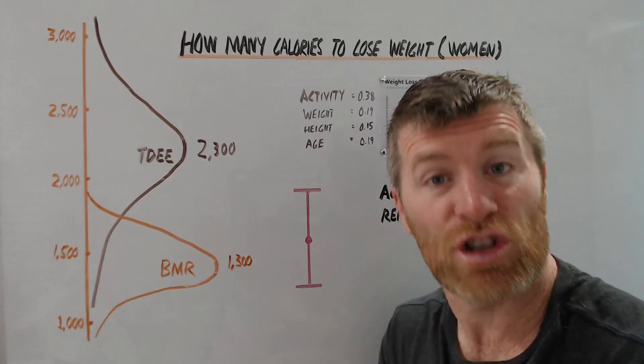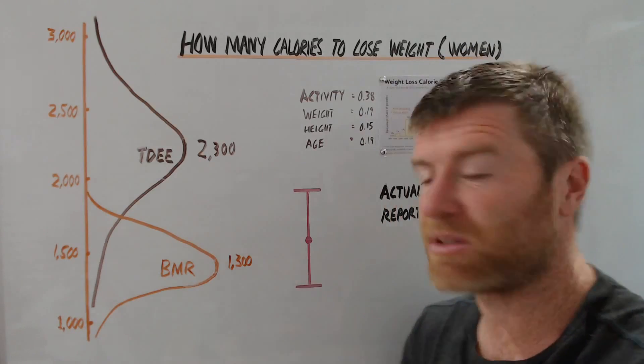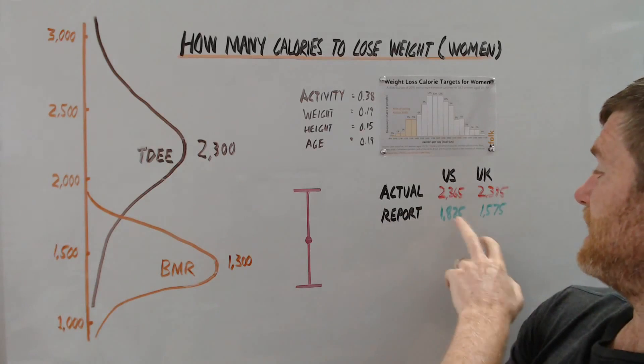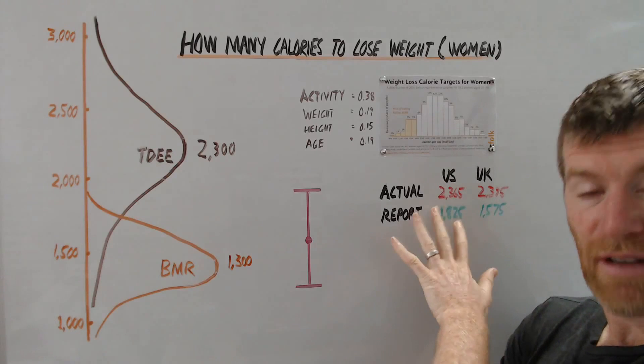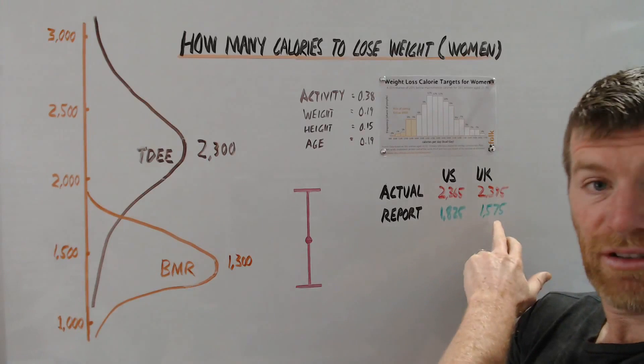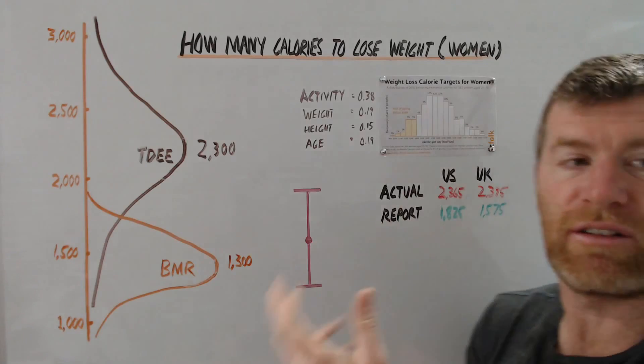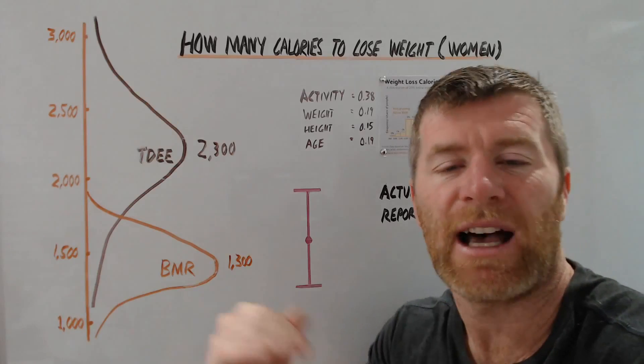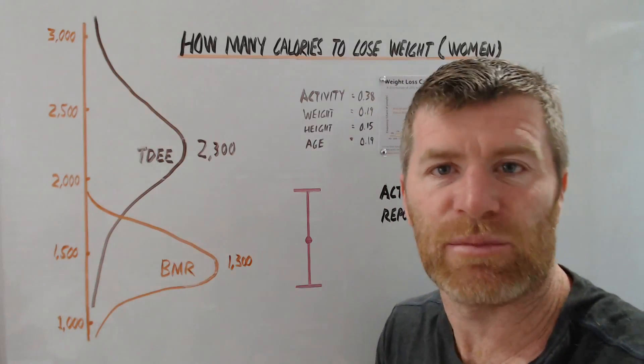But in reality, when you try that with clients, it doesn't work out so well. And this is the reason why. So they've done some studies and in the US, the average woman reports eating 1,825 calories, but in reality eats 2,365. In the UK, the average woman reports eating 1,575 calories, but actually in reality eats 2,395 calories. So what this means that in real life, when you're working with clients, you end up setting the target a little bit lower than you would have hoped, and people need to see some results early on.